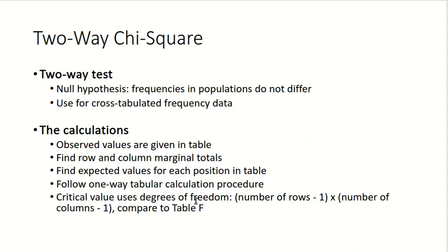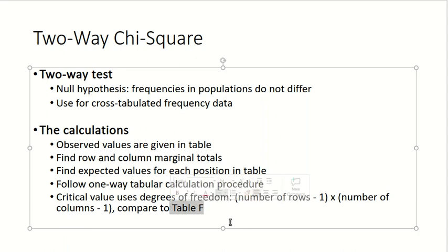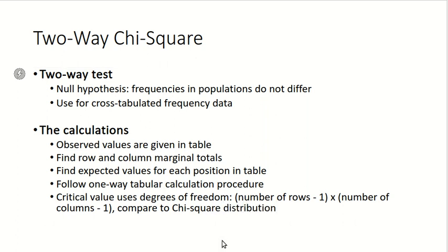We find the critical value with degrees of freedom equal to the number of rows minus one times the number of columns minus one. Based on those degrees of freedom and our calculated test statistic, we compare to the chi-square distribution.